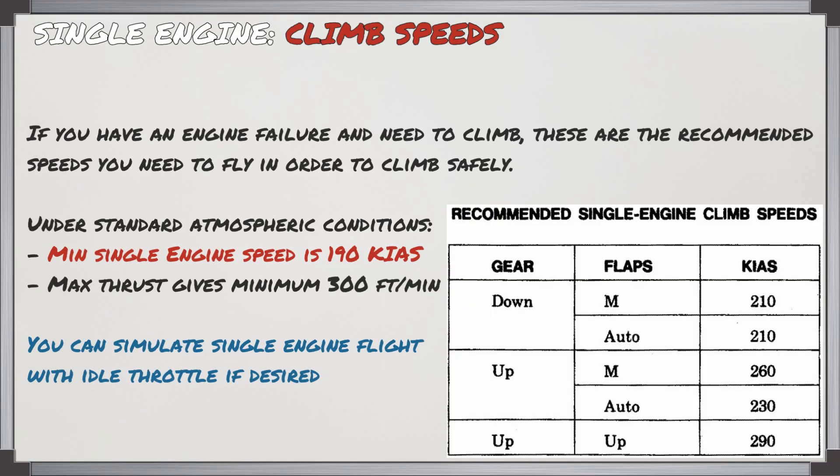If you have an engine failure and need to climb, these are the recommended speeds you'll need to fly to climb safely. The minimum single engine speed is 190 knots, and at maximum thrust this will give you at least 300 feet per minute. If you want to practice single engine flight, you can just bring one throttle back to idle and that'll be good enough.